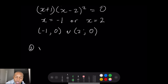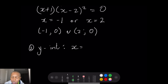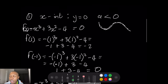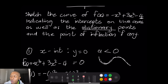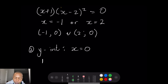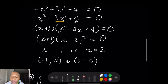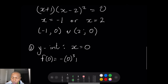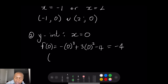Now for the y-intercept, we set x = 0. Since the equation is in standard form, the constant term gives us the y-intercept directly. f(0) = −(0)³ + 3(0)² − 4 = −4. So the y-intercept is at (0, −4).